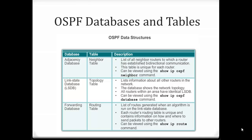We have our link-state database, which is our topology table. This lists information about all other routers in the network and is the same for every single router in the OSPF domain. You can view this with the show ip ospf database command. Then we have our forwarding database, or routing table, which lists the routes we take to get to our destinations. The routing table is unique for each router in terms of the routes, but all networks listed should be the same for every router once converged. To view the routing table, use the show ip route command.